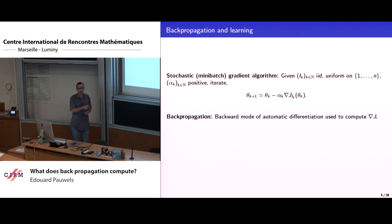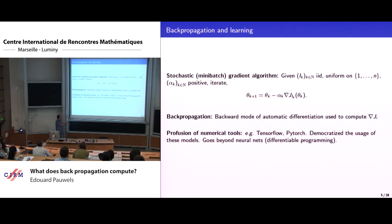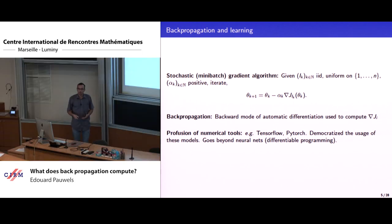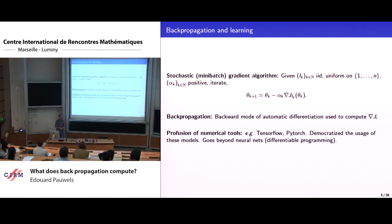What is specific about neural networks is that the gradient is computed using backpropagation — automatic differentiation. Combining automatic differentiation and optimization is at the heart of those numerical software packages which are extremely successful today. With this you can essentially train a neural net without any knowledge in optimization or analysis, without even knowing that you're optimizing something. It actually goes beyond neural nets — sometimes people talk about differentiable programming.